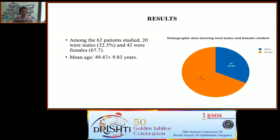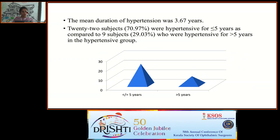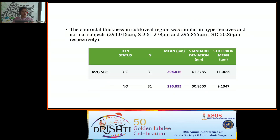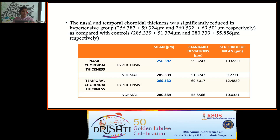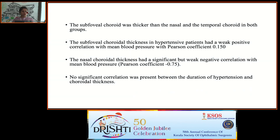Among the 62 patients studied, 20 were males and 42 were females, with a mean age of 49.47 ± 9 years. Mean duration of hypertension was 3.67 years; 22 subjects had hypertension for ≤5 years and 9 for more than 5 years. Sub-foveal choroidal thickness was similar in hypertensive and control groups, but nasal and temporal choroidal thickness was significantly reduced in the hypertensive group. Sub-foveal choroid was thicker than nasal and temporal choroid in both groups. SFCT showed a weak positive correlation with mean BP; nasal choroidal thickness showed a weak negative correlation with mean BP.